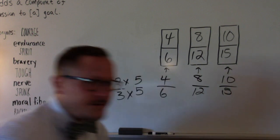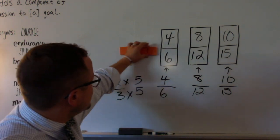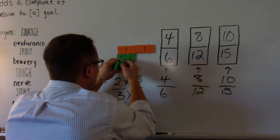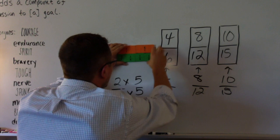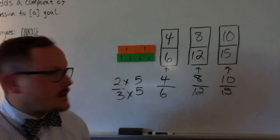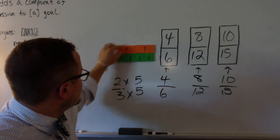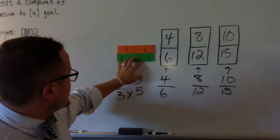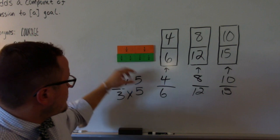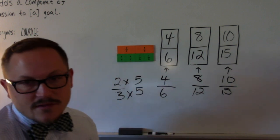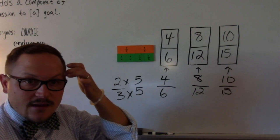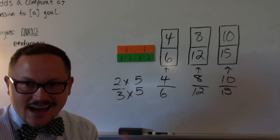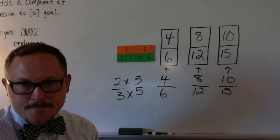We see from this example that 2/3 is equivalent in size to 4/6. I have some of them upside down — I apologize — but we see that they are the exact same size. These 2/3 do not take up any more or less room than these 4/6, and that would be equivalent to 8/12, and the same thing with 10/15. Renaming the fraction does not change the size of the fraction when it's equivalent.